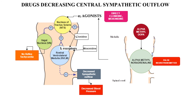Tamsulosin and silodosin may cause floppy iris syndrome. Drugs decreasing central sympathetic outflow act on the nucleus tractus solitarius in the brain, where alpha-2 receptors are present. This nucleus has dual connectivity with the vagal nucleus and rostral ventrolateral medulla. Direct agonists such as clonidine and moxonidine act on the nucleus tractus solitarius, reducing vagal tone (no reflex tachycardia) and decreasing sympathetic outflow via the rostral ventrolateral medulla. Alpha-methyldopa is a false neurotransmitter that acts as a substrate and produces alpha-methylnoradrenaline, which acts as an alpha-2 agonist.